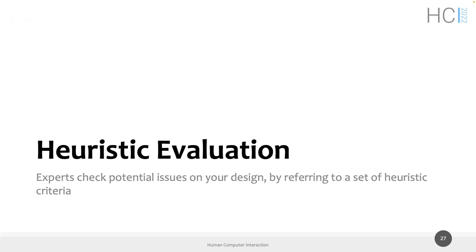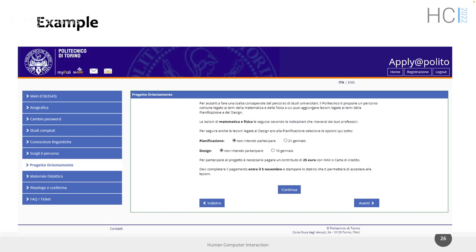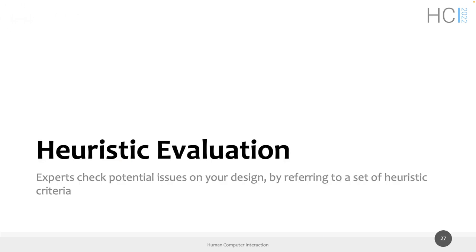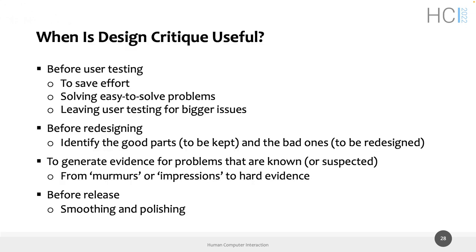We have just seen the first example of an expert evaluation: the cognitive walkthrough. In the last 10 minutes, let me introduce the topic for the next lessons and the assignment — another expert review method: heuristic evaluation. Experts check our designs applying a set of heuristics — principles or rules of thumb — to assess usability problems. The main goal here, unlike the cognitive walkthrough which focused on learnability, is specifically finding usability problems. This technique is also called 'design critique.'